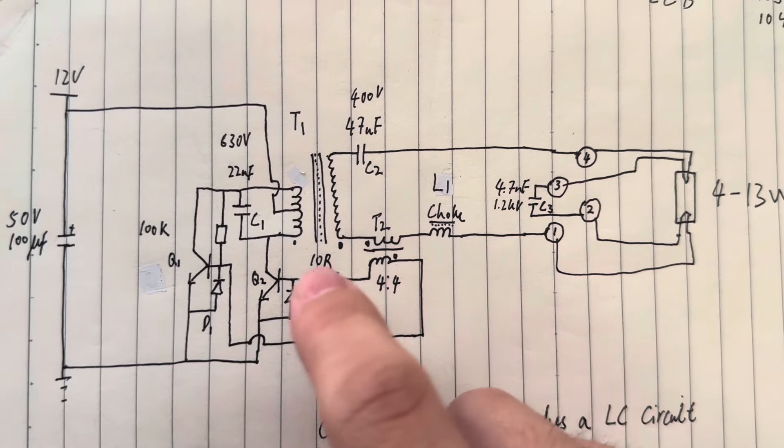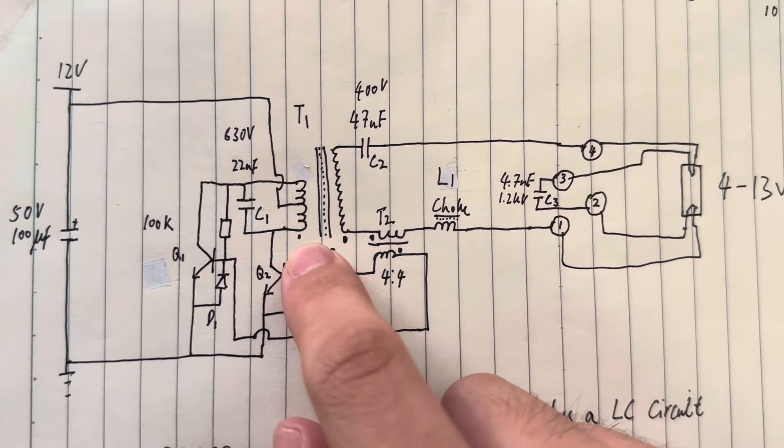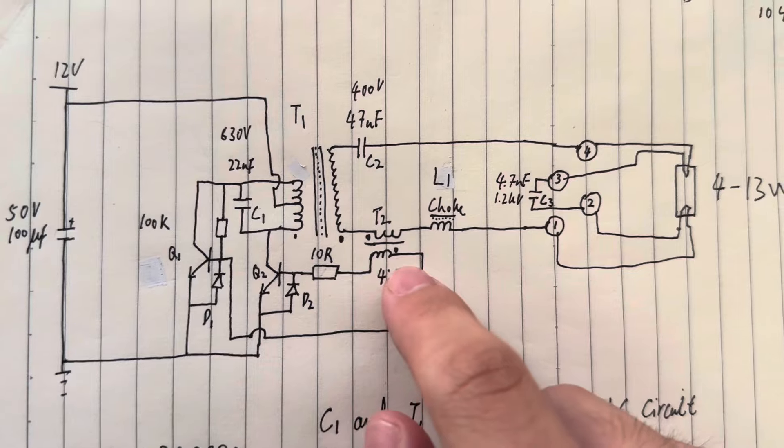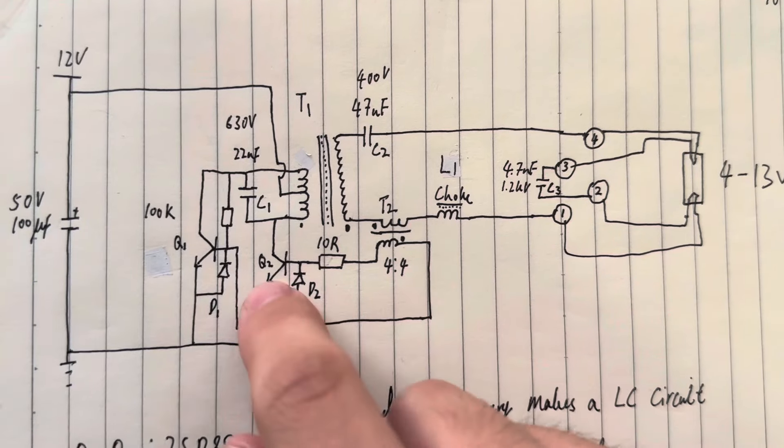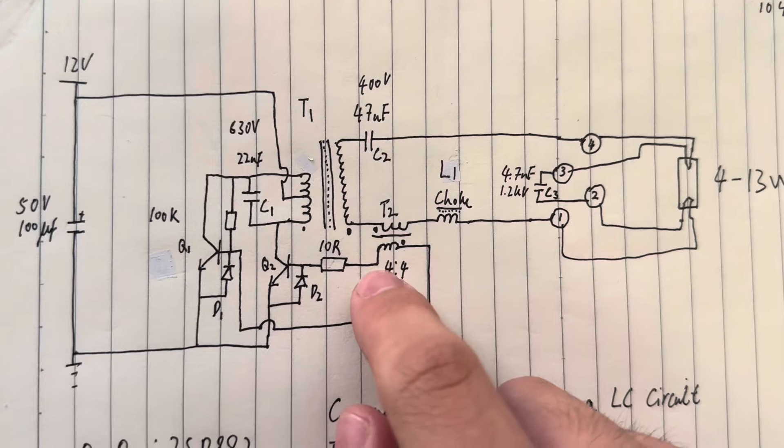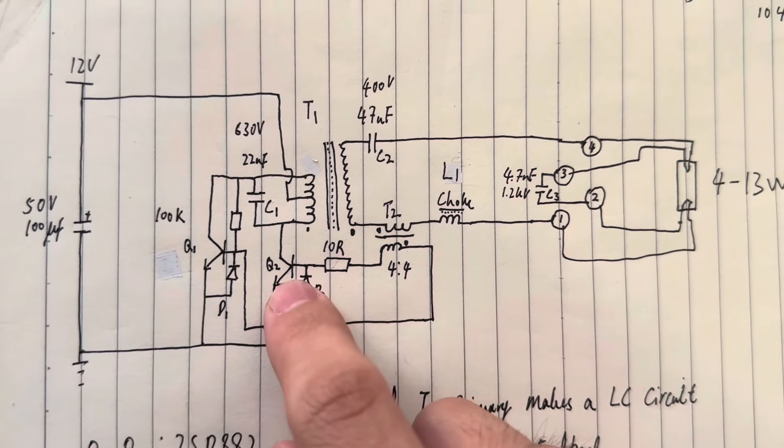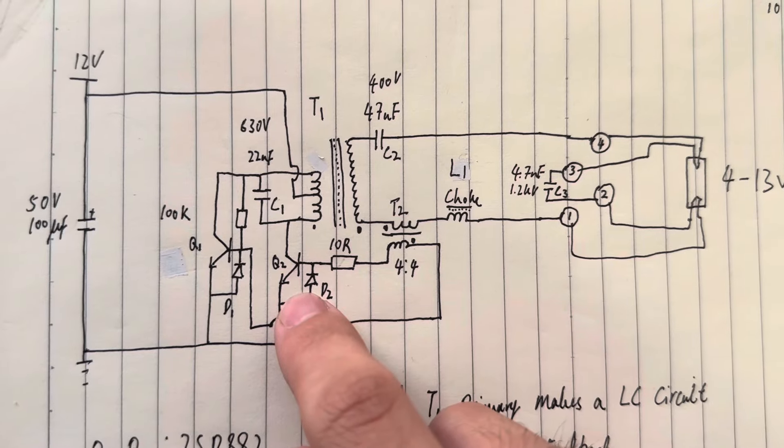For example, if we assume this transistor turned on first, the dot here will become negative, as well as this dot here will become negative. So this dot here will become negative, which will pull this base down. But the one without the dot will become the positive, which will allow this transistor to conduct more currents.